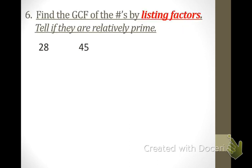Number 6: find the GCF by listing factors and say whether they are relatively prime. Let's start with 28. 1 times 28, 2 times 14, 4 times 7 — and that is it for 28.